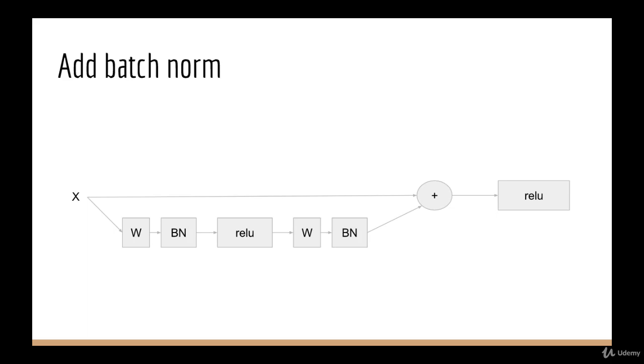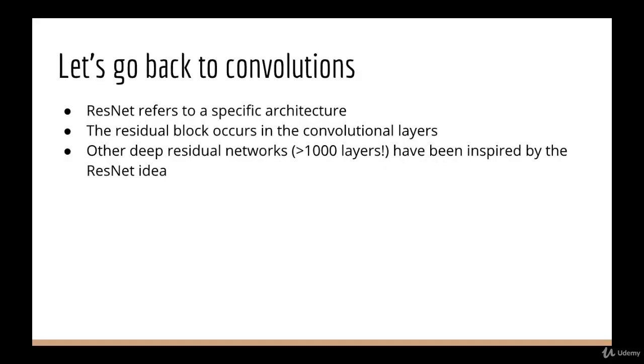Also recall that when you have batch norm, you no longer need to have bias terms in your dense layer. So now we can finally go back to CNNs and look at the actual blocks that were used in ResNet. Note that we are now going to stop assuming we're looking at feedforward neural networks and go back to convolutions, since all of the residual blocks occur in the convolutional layers of the ResNet. ResNet typically refers to a specific CNN architecture. So that's what we'll be discussing, although there's no reason you couldn't experiment with this principle using other types of layers. In fact, there have been many other kinds of deep residual networks that were inspired by ResNet, some over 1000 layers deep.